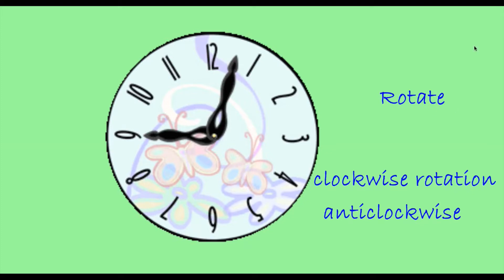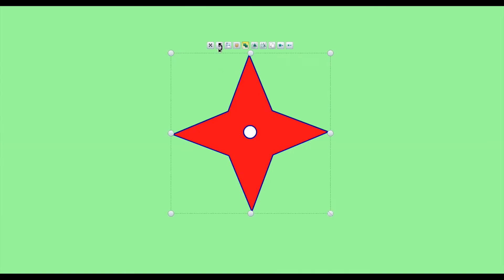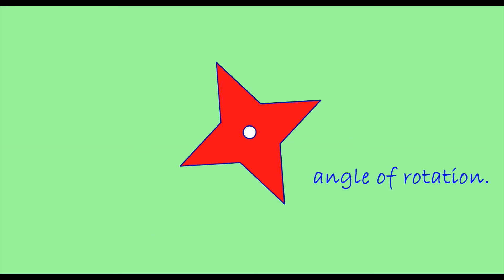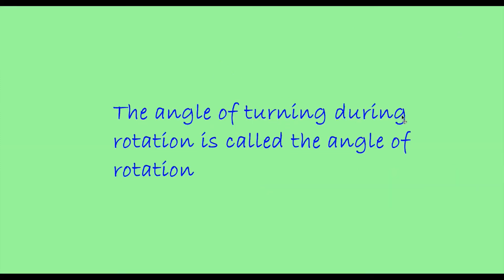The hands of the clock move about a fixed point. This point we can call the center of rotation. When we rotate an object, the angle changes. The angle of turning during rotation is called the angle of rotation.